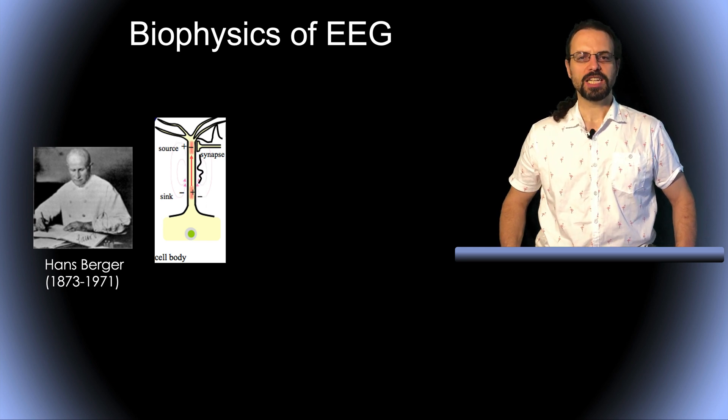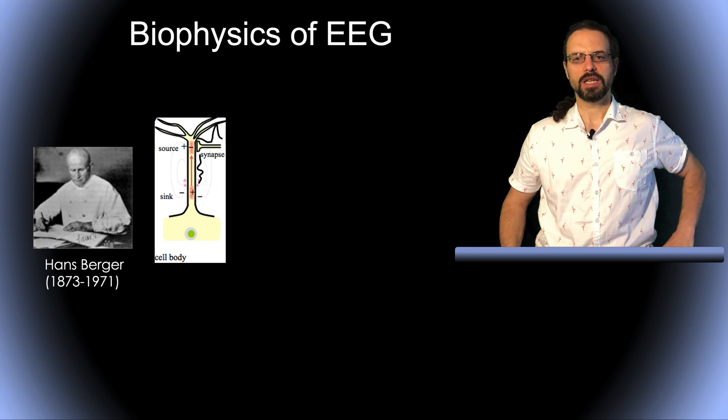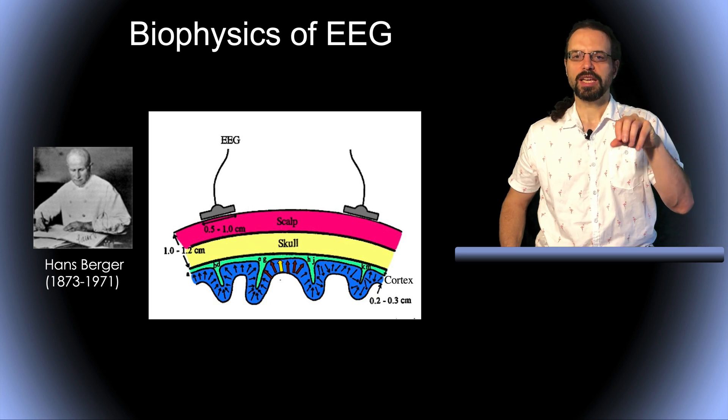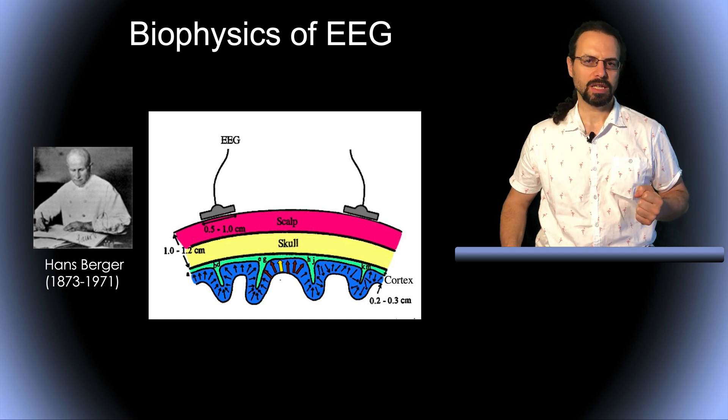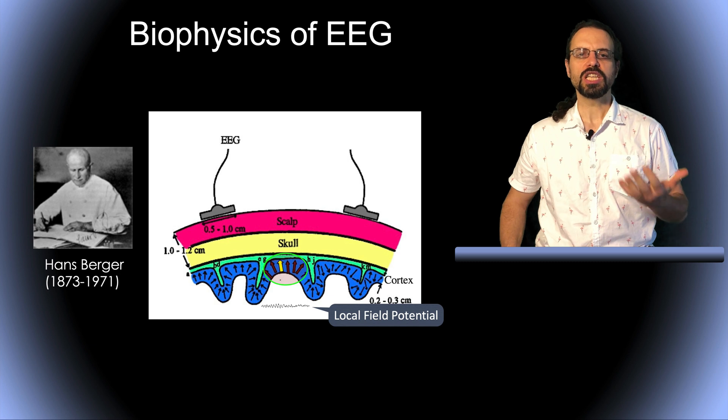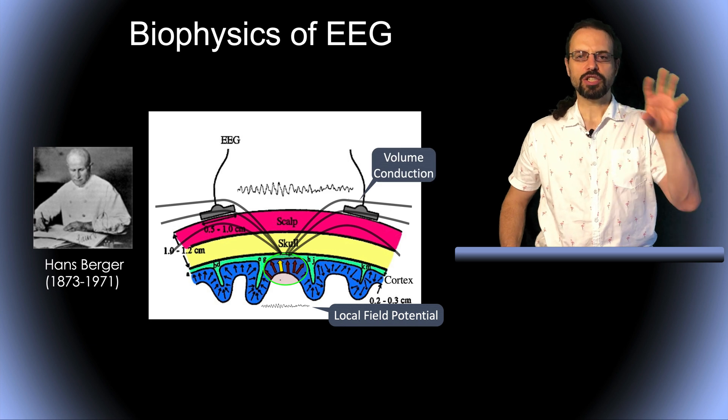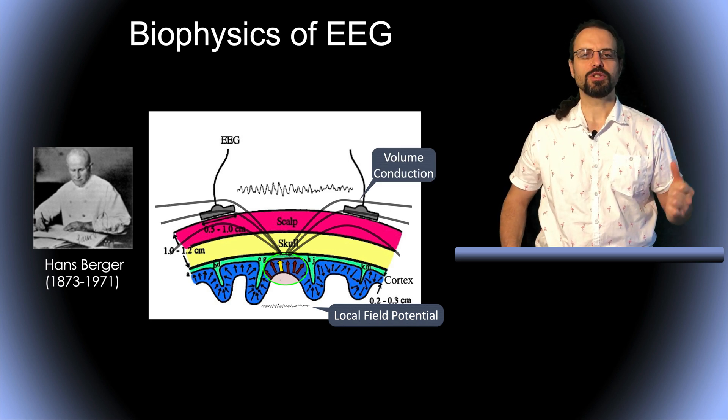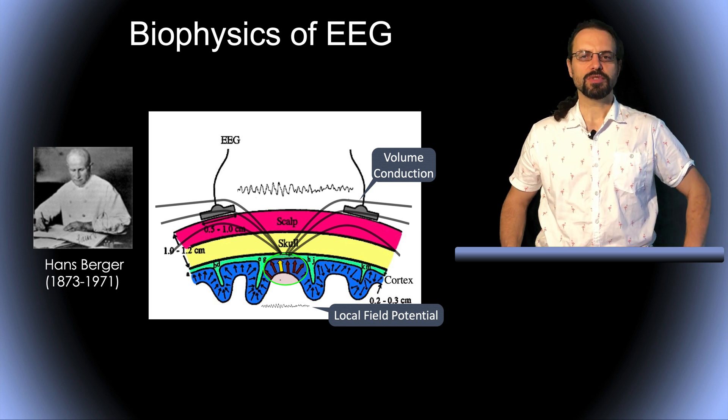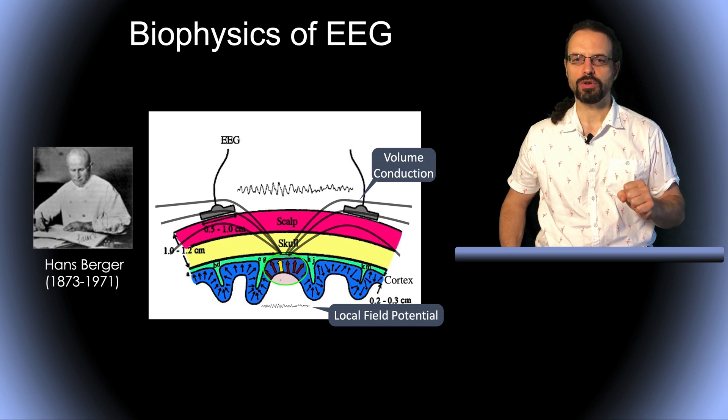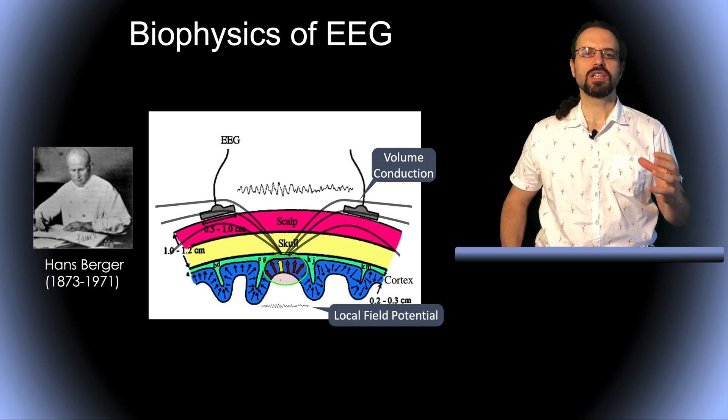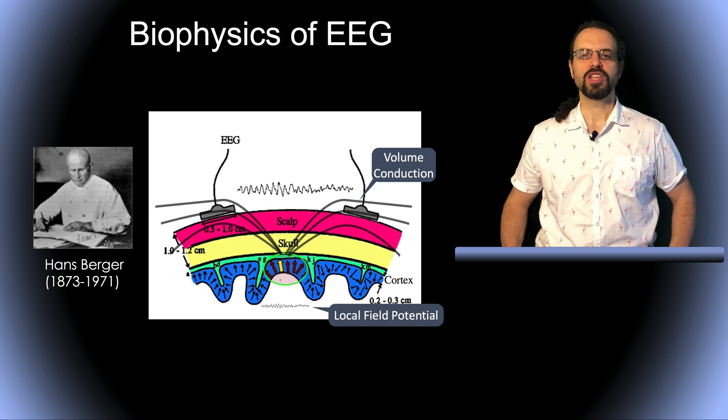And this movement of electrical charges along the dendrite generates an electrical potential. When we have many of these neurons oriented in the same way and active at the same time, these electric fields sum to generate what we call the local field potential, which is the EEG at the surface of the cortex. Through volume conduction, this potential may then be recorded at the EEG scalp sensors. So this is where the EEG comes from. It comes from synchronized cell excitation of large groups of neurons, and the synchrony of cell excitation determines the amplitude and rhythm of the EEG signal.